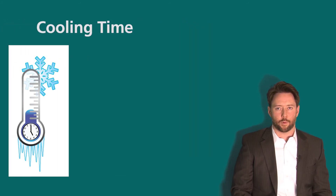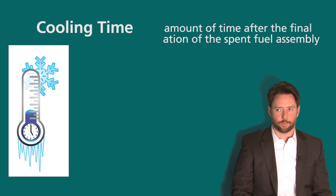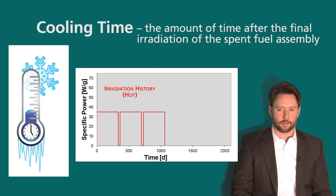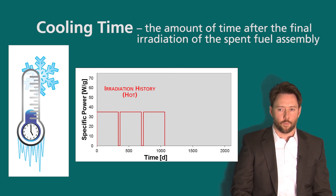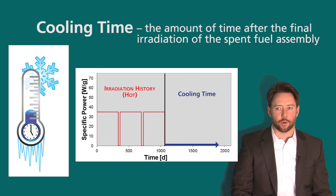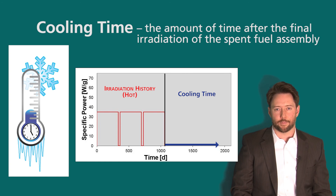Finally, we want to talk about cooling time. Cooling time is simply the amount of time after the final irradiation of the spent fuel assembly. In the figure of the irradiation history, we can see the assembly was operated at 35 watts per gram with two shutdowns, and after the final irradiation the cooling time begins, noted by the blue line. Typically the spent fuel sits in the spent fuel pool where it is allowed to cool, but this may also include time that the assembly has been placed into dry storage.